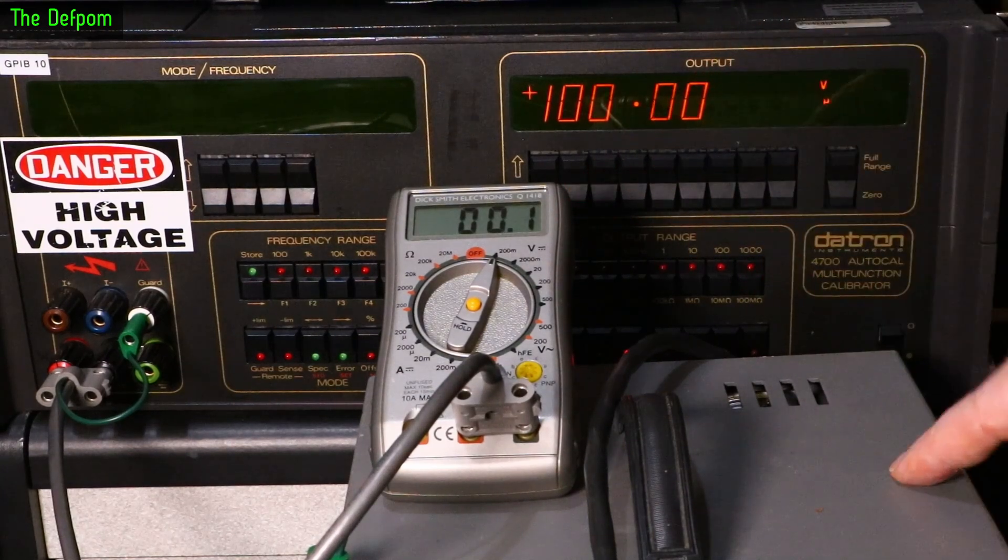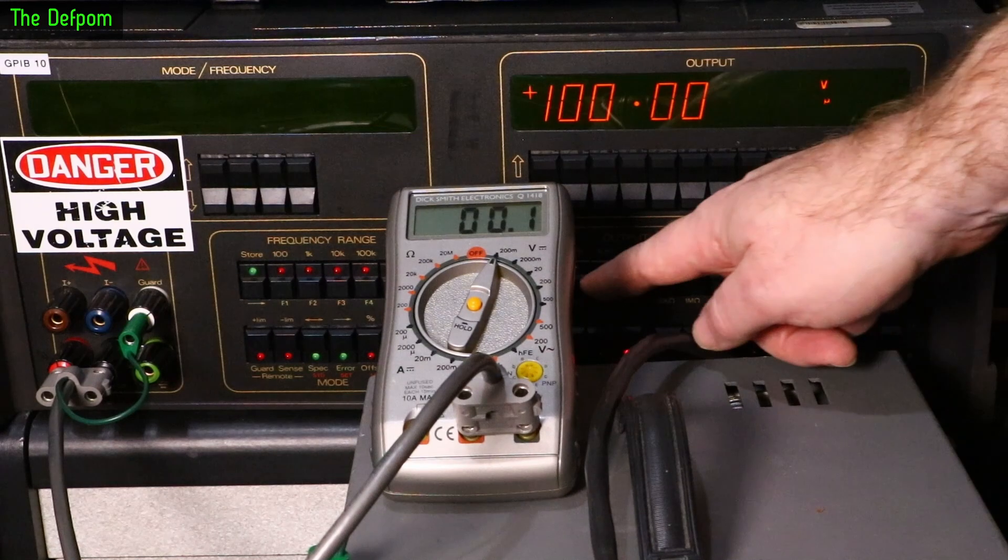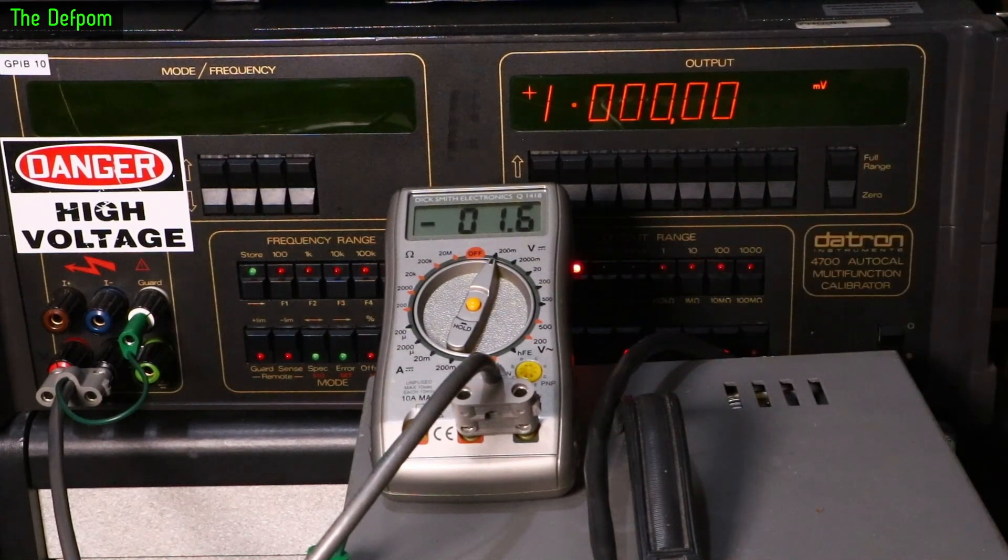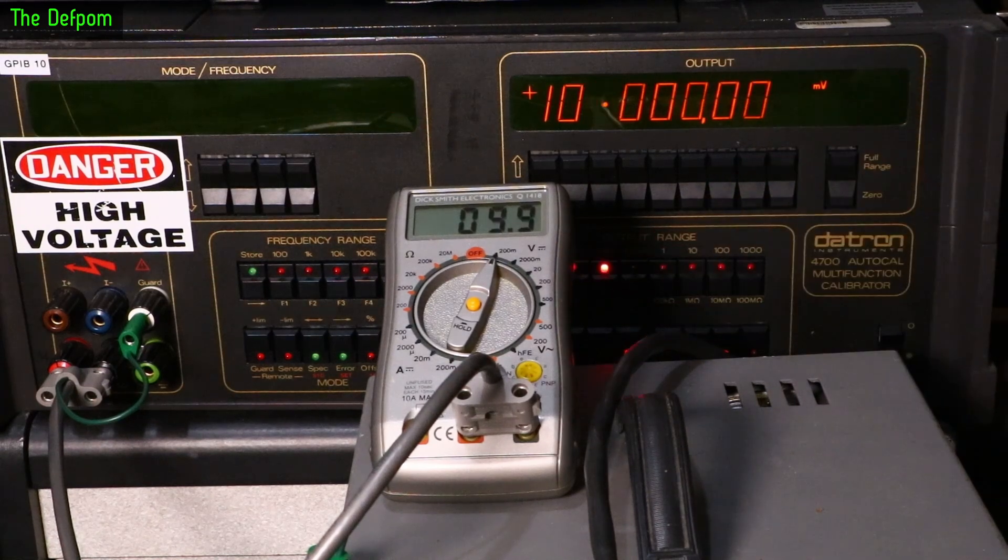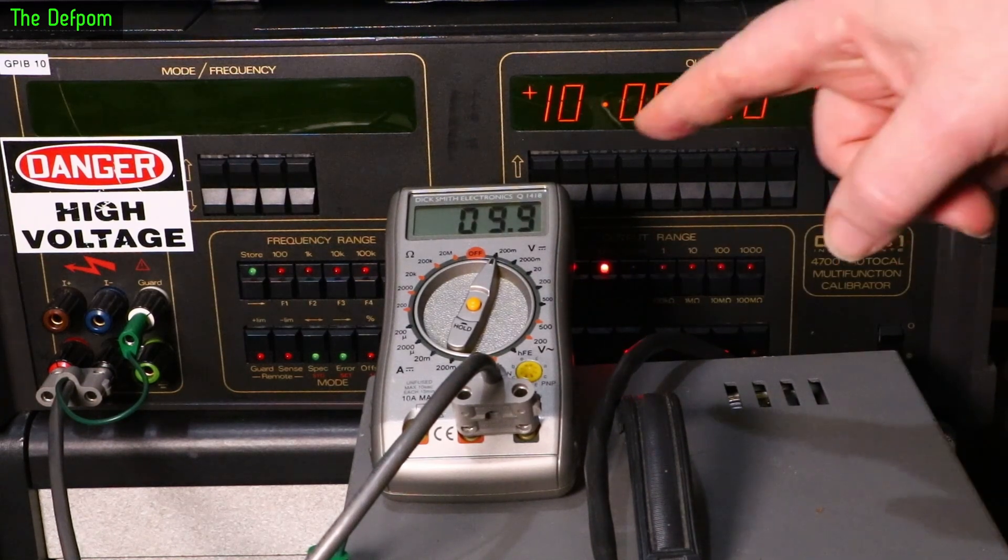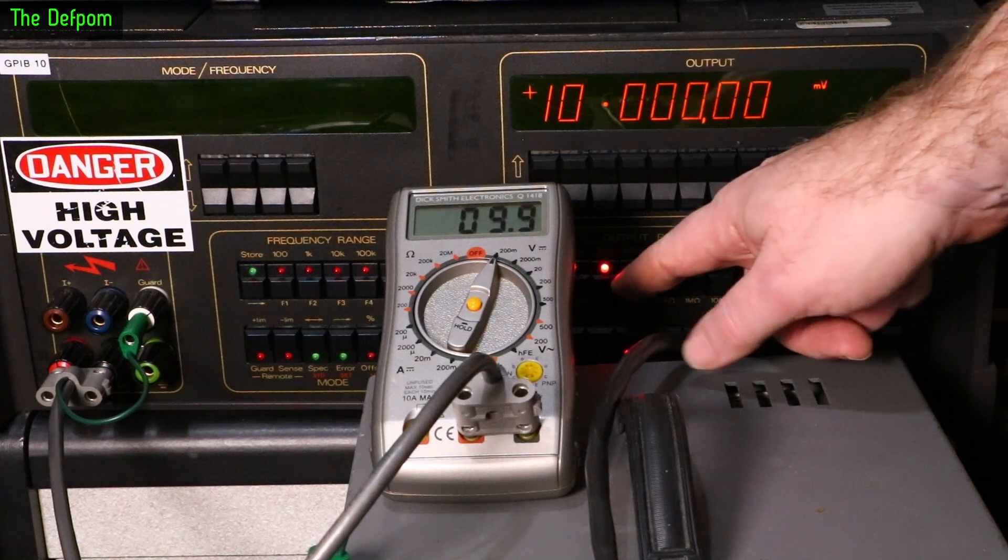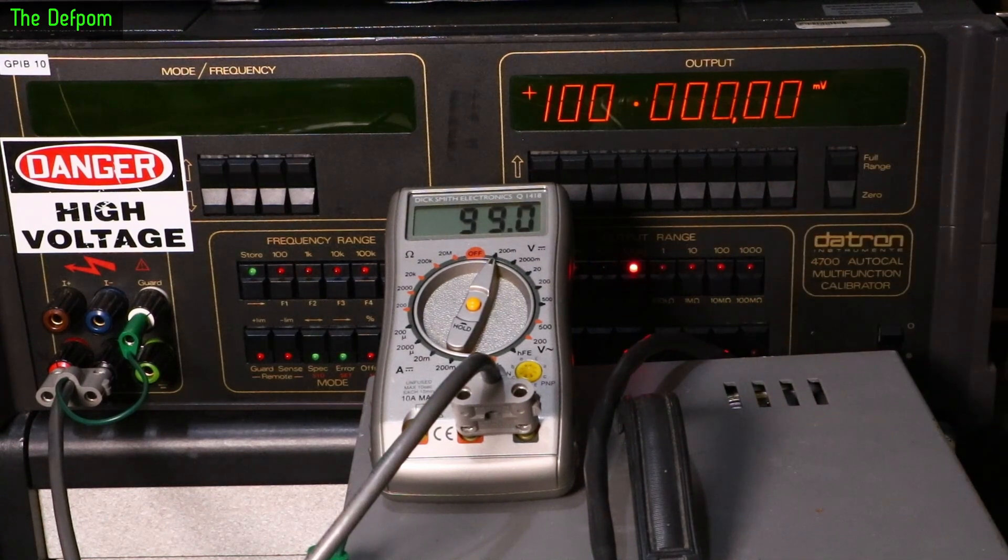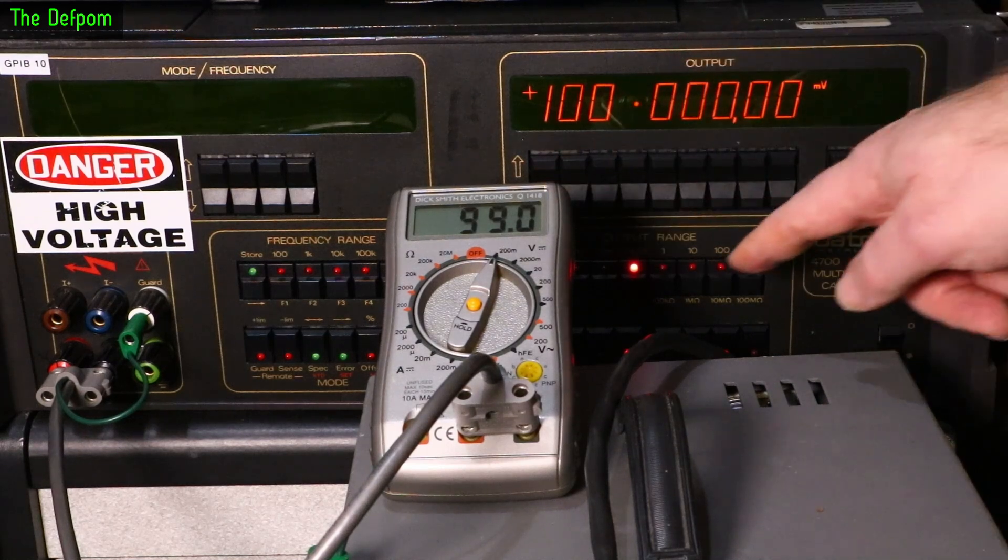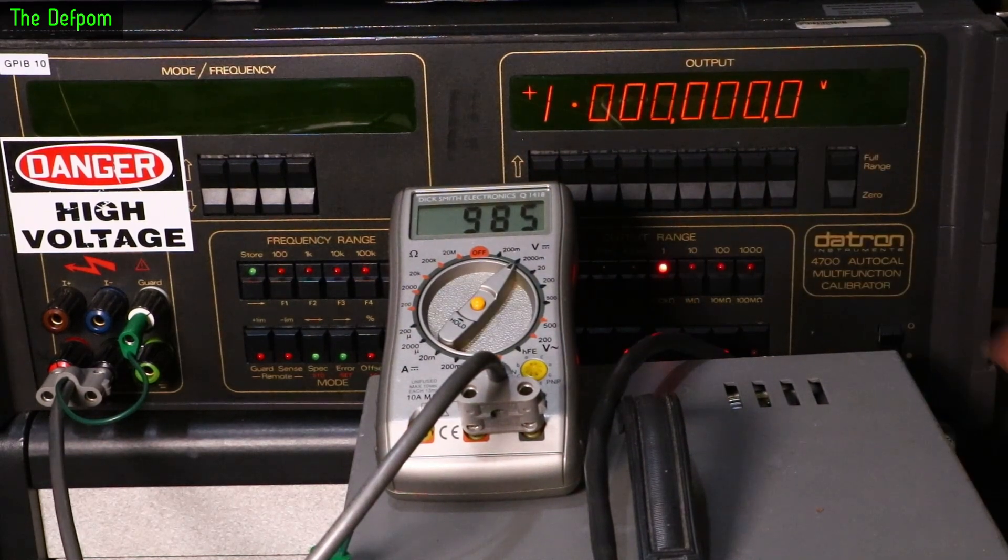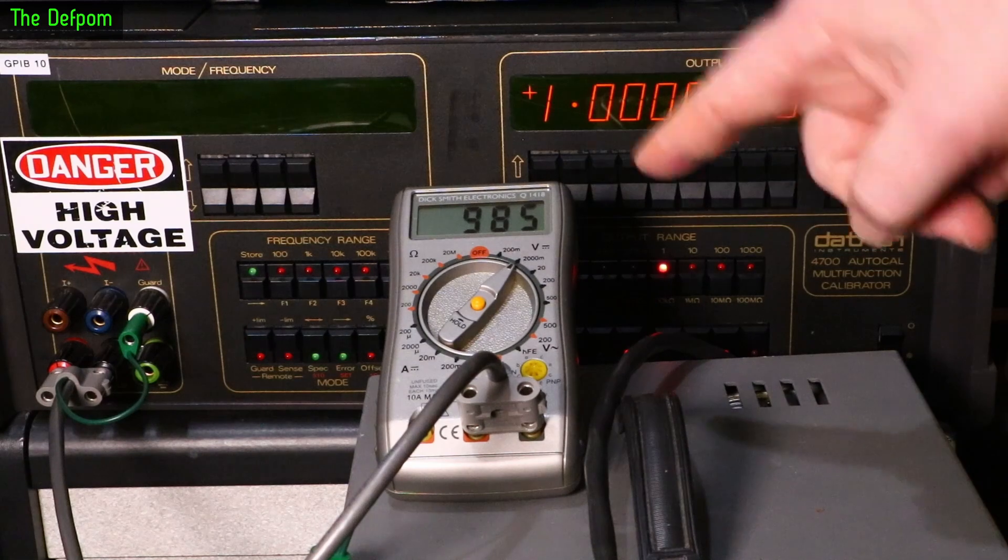And you can actually see it. One millivolt, perfect. Two millivolts, oh it's one count down. This one count, not bad. 100 millivolts, let's stand by one millivolt here. It's worse at the top end. So one volt is 15 counts down.